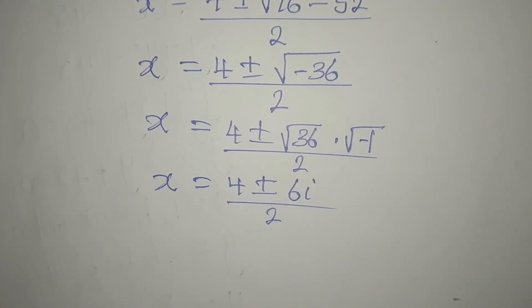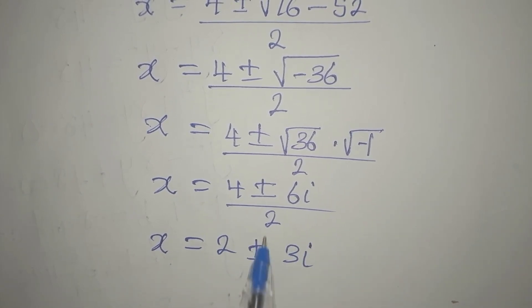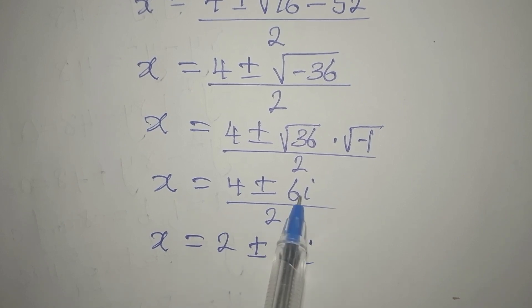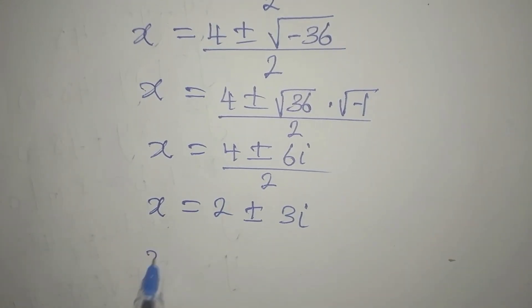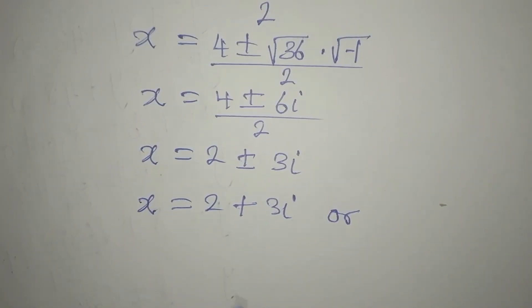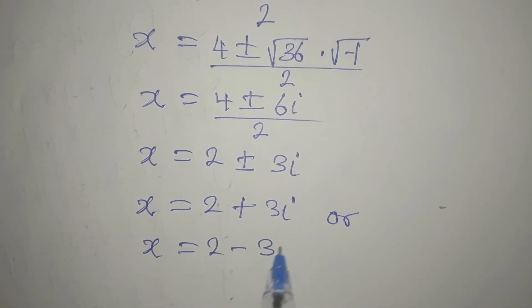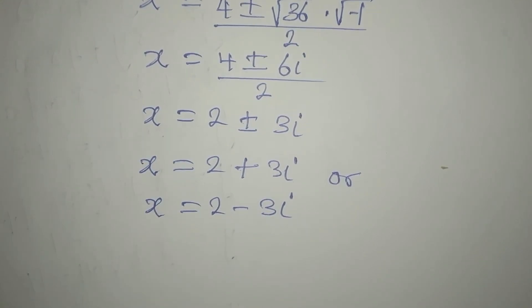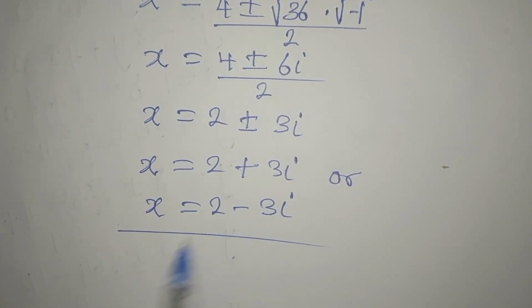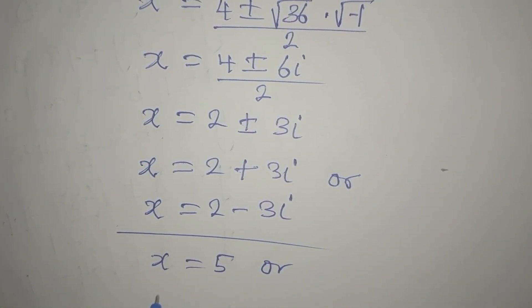So x equals 2 plus or minus 3i, meaning x equals 2 plus 3i or x equals 2 minus 3i. Combined with the earlier solutions, we already had x equals 5 or x equals negative 1.